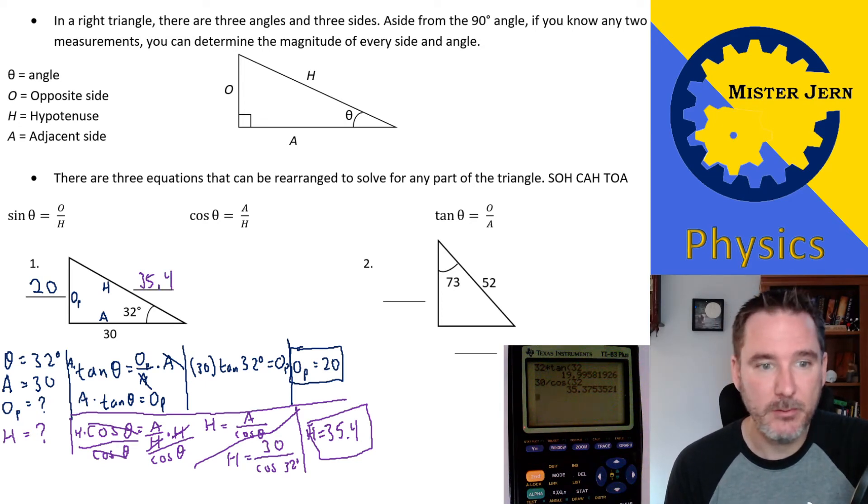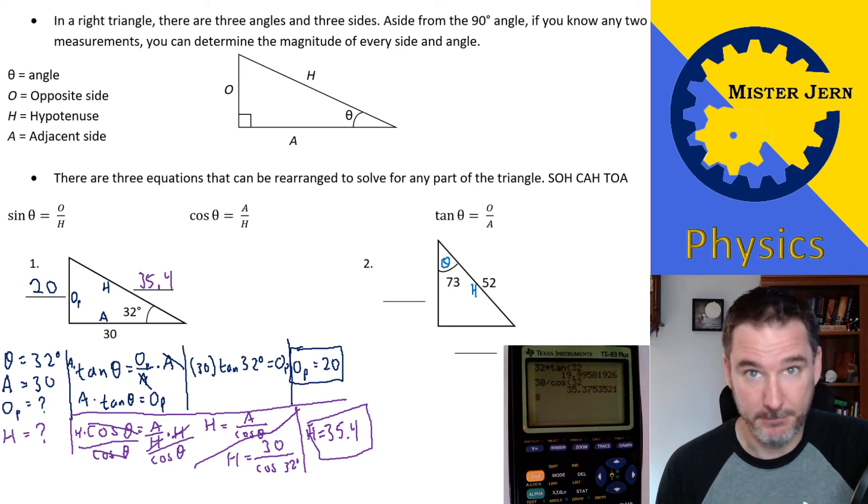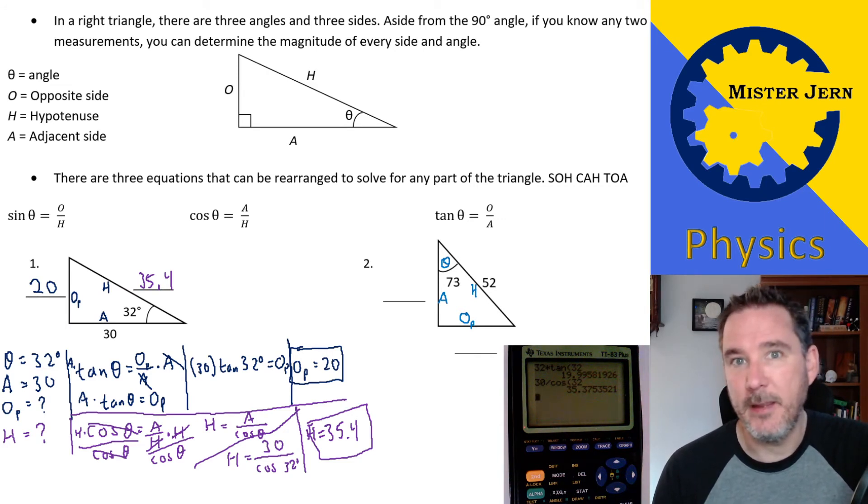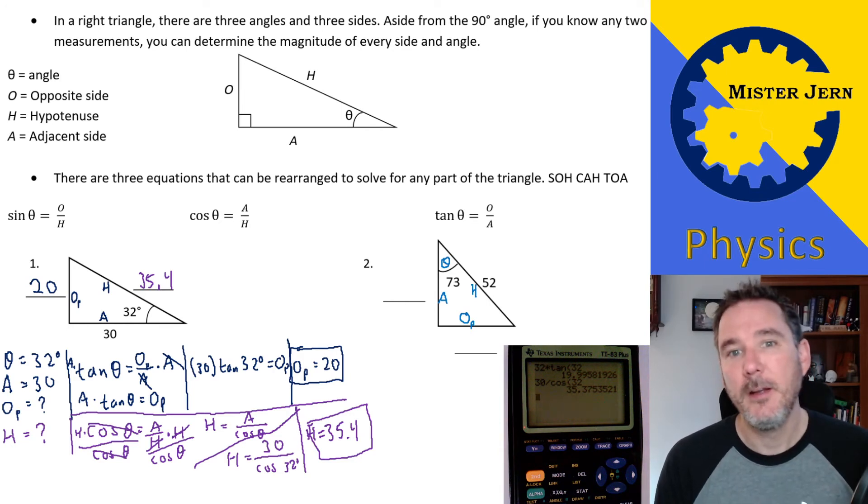The trick again is just to identify the knowns or the givens, figure out what your unknown is going to be that you're going to solve for, and then choose the equation that uses those variables. I'm not going to do this whole next one here, but this next one is the same idea. It's a little bit different though, because my theta is up here. My hypotenuse is still going to be over here. It's the longest side and it's on the opposite side of the right angle. But that means now, because my theta is up at the top, my opposite side is going to be down here and my adjacent side will be here. So just be careful that you have to identify the adjacent and opposite sides based on where the theta is. And it could change. Like you just saw, it's different.